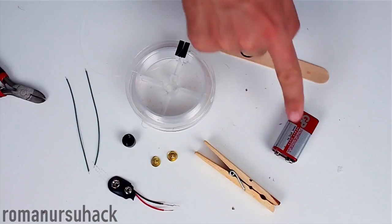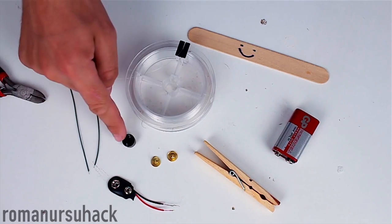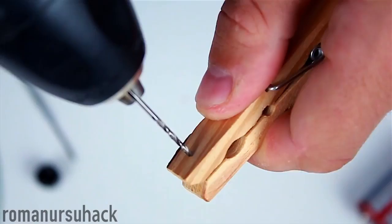For the third project we'll need an ice cream stick, a battery, clothespin, a battery holder, line, two pins, buzzer, and a few wires.